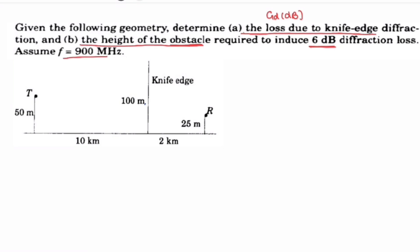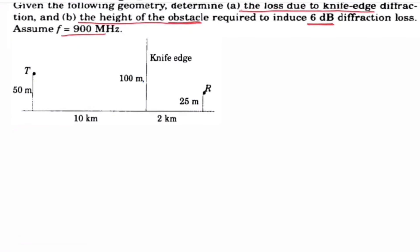Given: frequency F equals 900 MHz. First, convert frequency to wavelength. Lambda equals C divided by F, which is 3×10⁸ divided by 900×10⁶. The result is 0.333 meters. Lambda equals 0.333 meters. We will need this lambda value going forward.